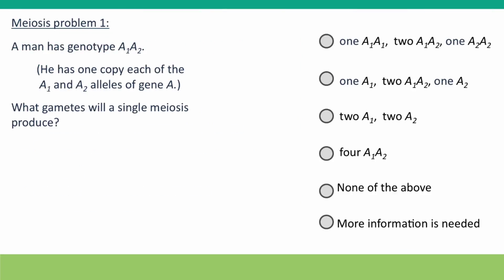So here's the first problem. A man has genotype A1, A2. We're only considering one gene on one chromosome. What gametes is meiosis going to produce?